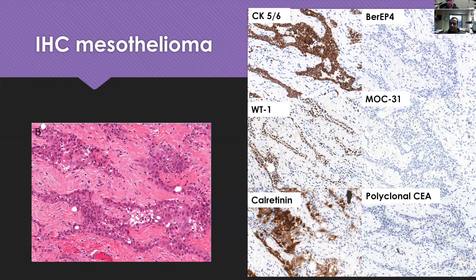I always try to do at least three markers on both sides — for carcinoma and mesothelioma. In this case we have three mesothelioma markers: cytokeratin 5/6, WT1, and calretinin; and three carcinoma markers: BerEP4, MOC31, and polyclonal CEA.